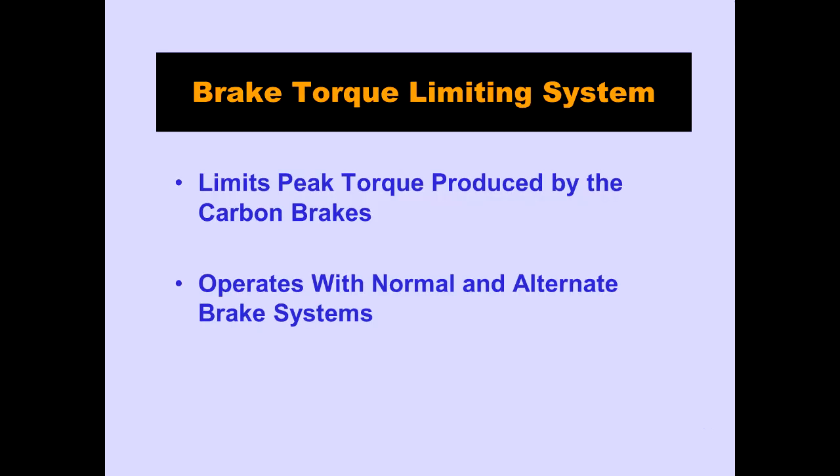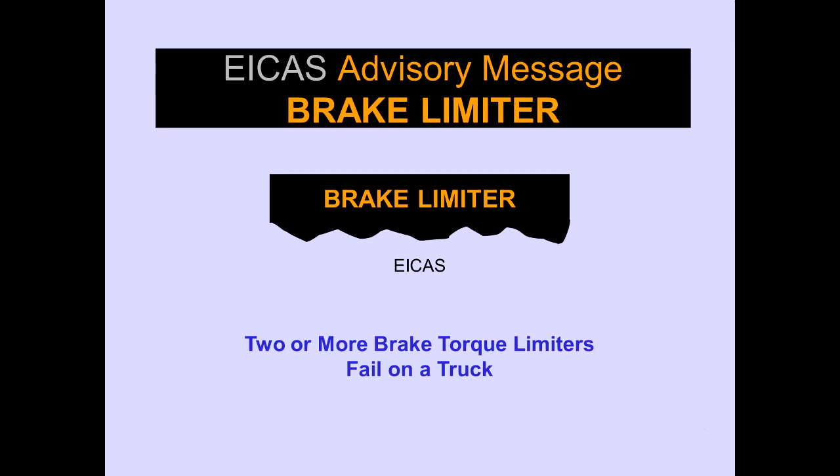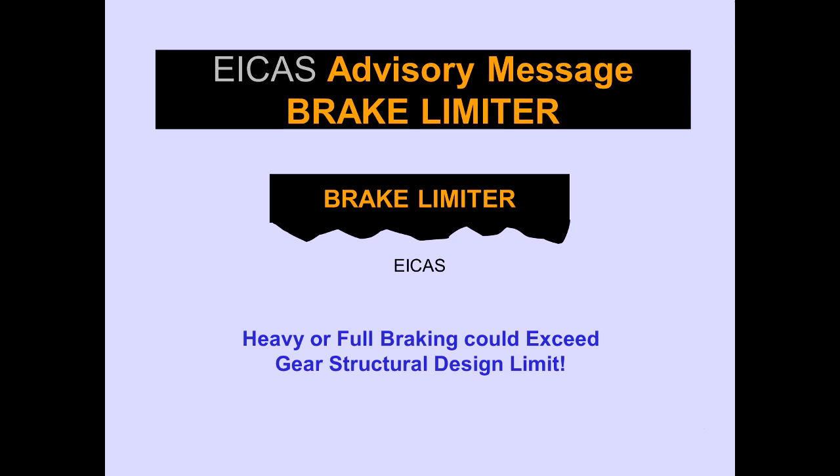The brake torque limiting system limits peak torque produced by the carbon brakes and operates with both normal and alternate brake systems. The ICAS advisory message, brake limiter, is displayed when two or more brake torque limiters fail on a truck. When the brake limiter message is displayed, heavy or full braking could exceed the gear structural design limit.